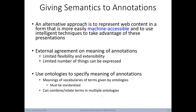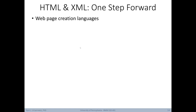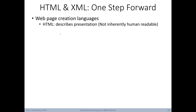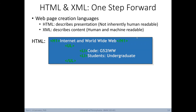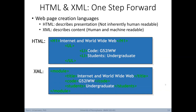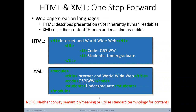One step in this direction is through the use of HTML and XML — both web page creation languages. HTML describes the presentation of the page and is not inherently human-readable. On the other hand, XML describes content that is both human and machine readable. HTML basically illustrates how text will be formatted on a page, for example indicating that text is to be given as a header. XML goes beyond HTML — we're not just worried about formatting and presentation, but now also tagging content so machines can identify and understand what that content actually is. However, neither HTML nor XML convey semantics, meanings, or utilize a standard terminology for contents.